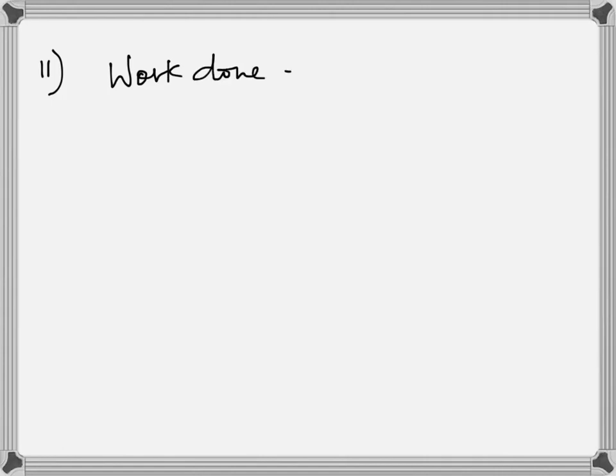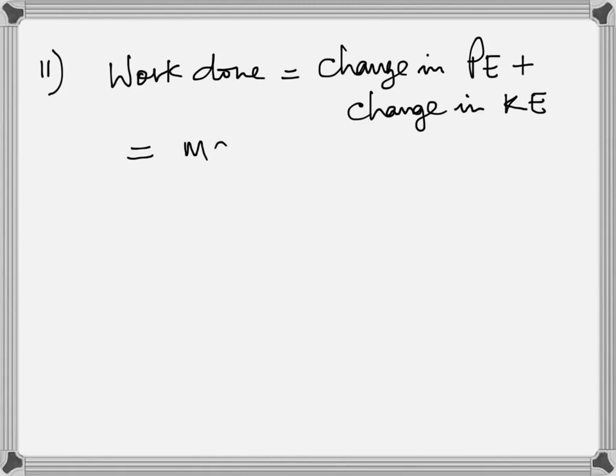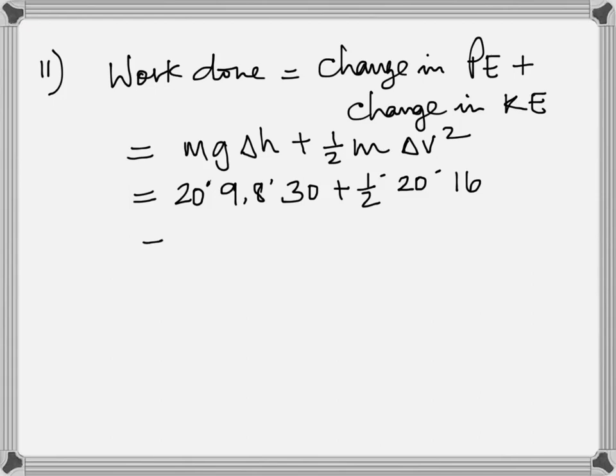Number 10. Change in kinetic energy equals work done. Work done is force multiplied by displacement. 100 times 6 gives you 600 Joules. That is the change in kinetic energy. Question 11. The work done in lifting the bucket equals change in potential energy plus change in kinetic energy. Because when it reaches the top, it's also moving at 4 meter per second.